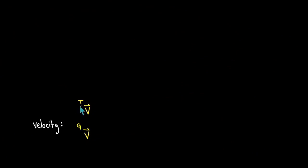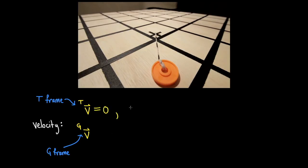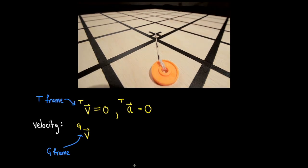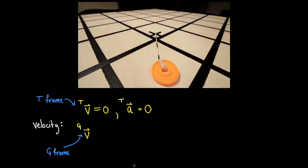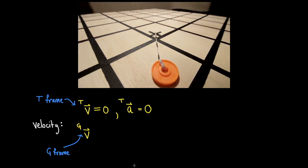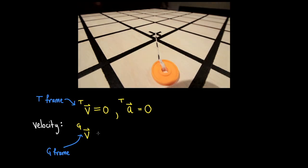We will denote the frame of such a vector by using a left superscript, G or T, to designate if we are considering the vector as an object in the G frame or the T frame. In the T frame, the position of the disk is fixed, so its velocity and acceleration are both zero. Pause the video here to determine the velocity of the disk as seen from the ground frame.